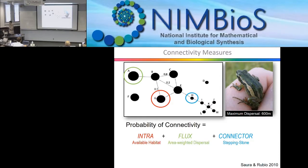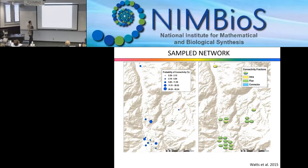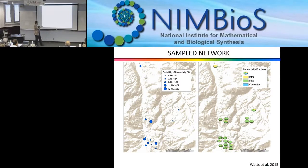We used this to assess how each of the 18 ponds contributed to connectivity. The larger the circle, the more connectivity. We separated results into three categories: the connectivity from most ponds is primarily due to dispersal availability — the flux. The pond isolated by itself contributes mainly through its size — the intra component.